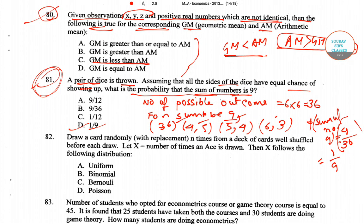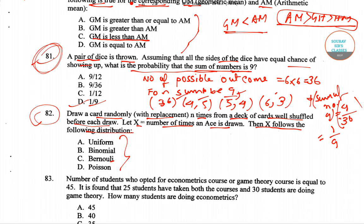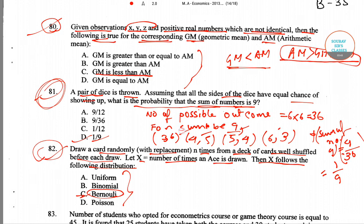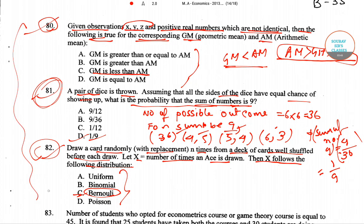Now we'll go to question number 82. It is given: draw a card randomly with replacement n times from a deck of cards well shuffled before each draw. Let X equal to number of times an Ace is drawn. Then X follows the following distribution. Four options are given. We know it will be Bernoulli distribution, so for question 82 the right answer is option C. I'll be giving you a couple of seconds to go through these three questions we have done so you guys remember this before I proceed further.